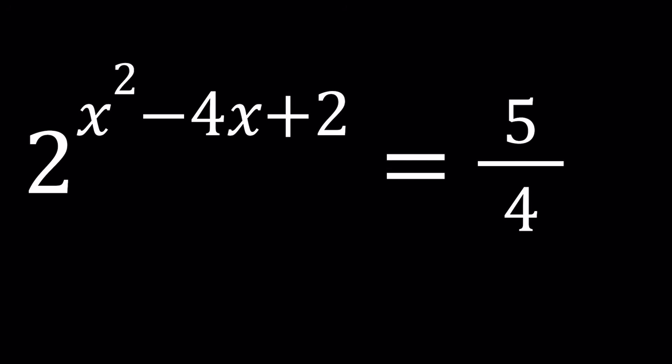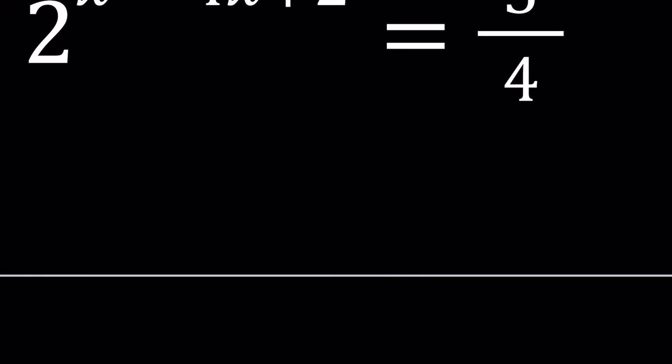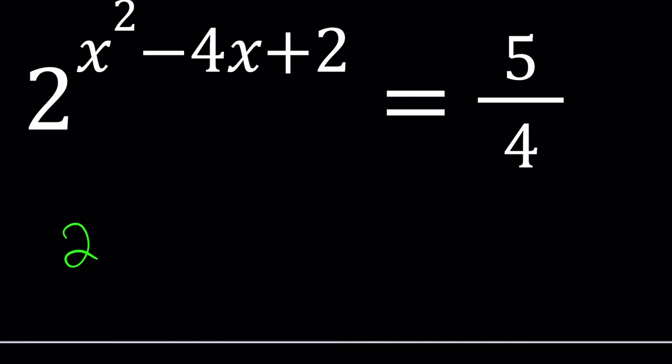So first of all, we're going to go ahead and cross multiply. And I'm going to tell you why we do that. So if you multiply two to the power x squared minus four x plus two by four, you get five. At this point,